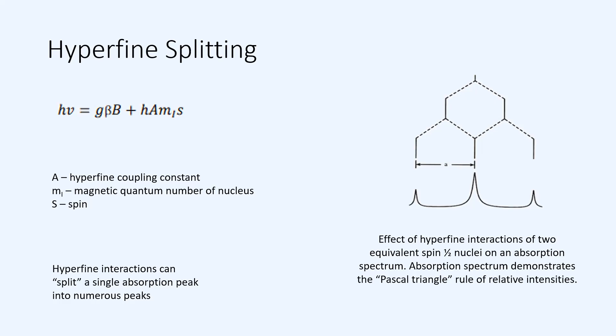These hyperfine interactions could split a single absorption peak into numerous peaks. A very general example is on the right where you see the effect of hyperfine interactions of two equivalent spin half nuclei on a single absorption spectrum. The intensities of these three different lines follows the Pascal triangle rule of 1 to 2 to 1. This can be extended to numerous equivalent nuclei.